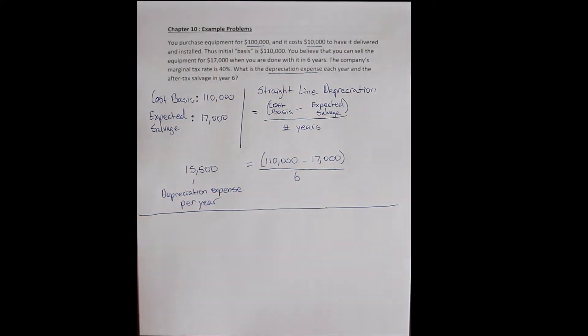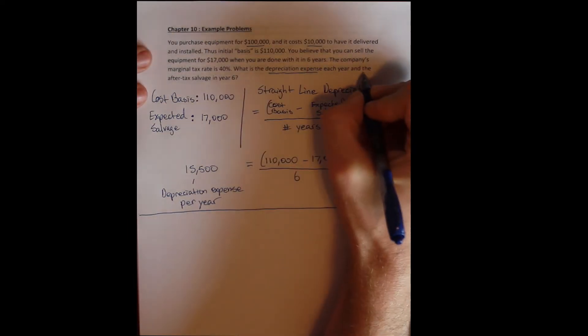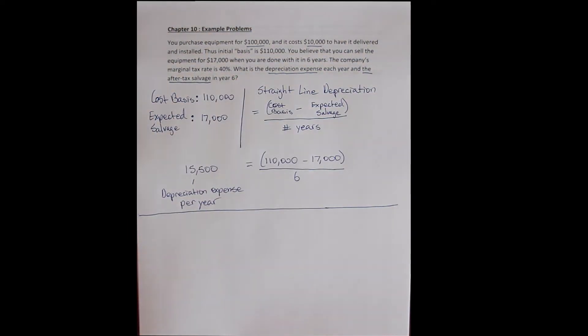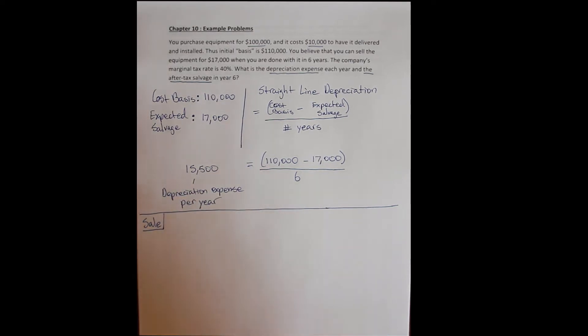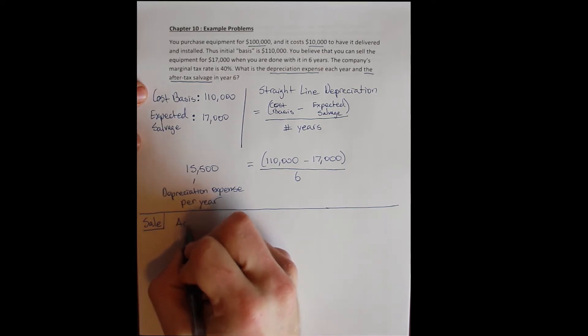Part two is what is the after-tax salvage value? Now remember the after-tax salvage value is what we're able to recover from the asset after taxes when we sell it. Because we may have to pay taxes on the sale if the actual sales price exceeds the book value of the asset at the current time of sale. So we're moving forward six years. We're done with the asset. We're going to sell it. And let's just say for convenience that we were exactly right.